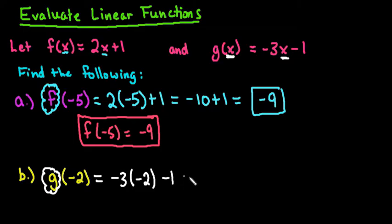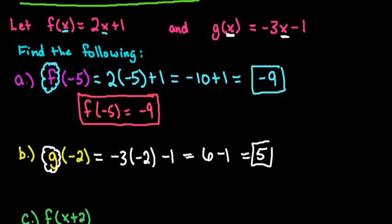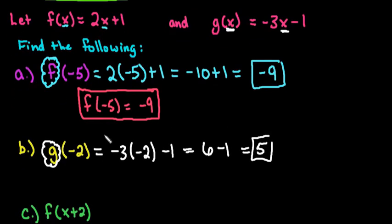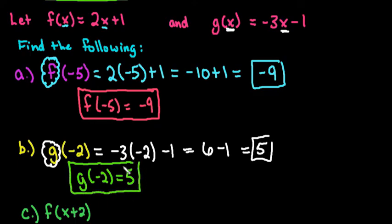And so if I simplify this, -3 times -2 would give me positive 6. And positive 6 minus 1 ends up giving me 5. So this is telling me that when I plug in -2 into my g equation, my output is positive 5. So this graph goes through the ordered pair (-2, 5).